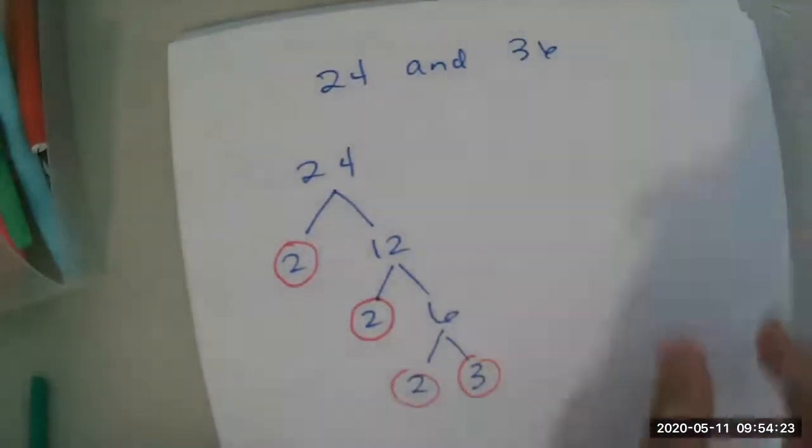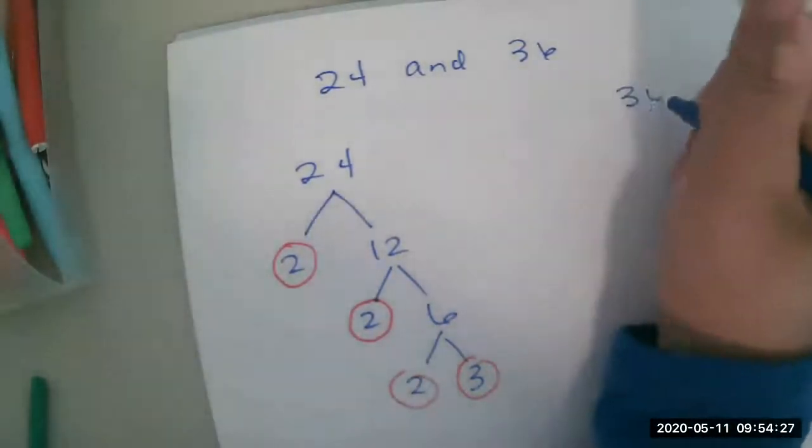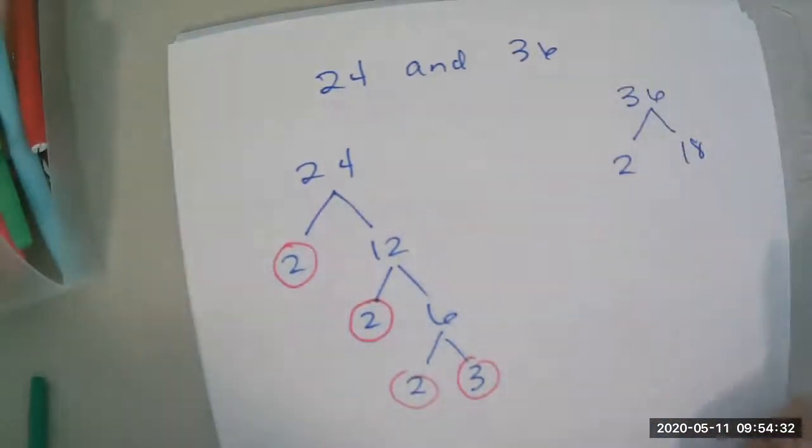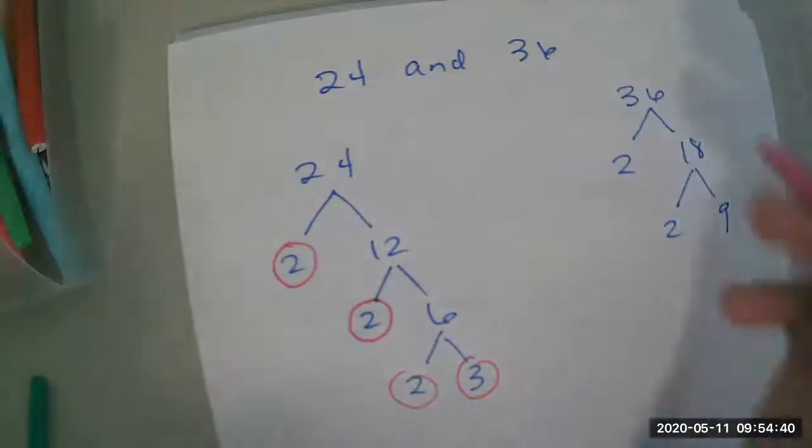Now I'm going to do 36. I'm going to do the same exact thing for 36. I'm going to use 2 times 18. It doesn't really matter what you use. You can use 6 times 6. It doesn't matter. You'll get the same answers in the end. 2 times 9. And again, I'm circling my prime factors.